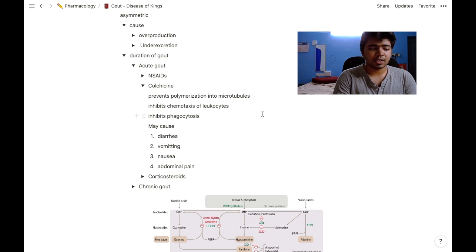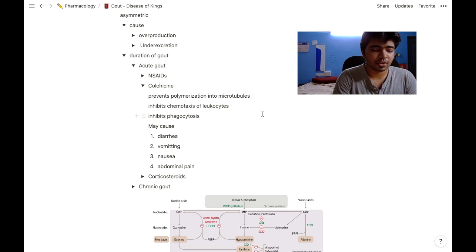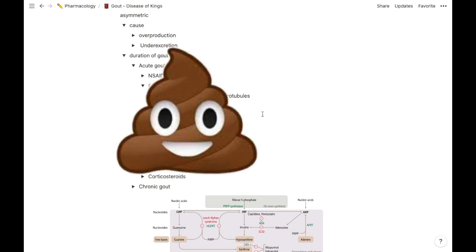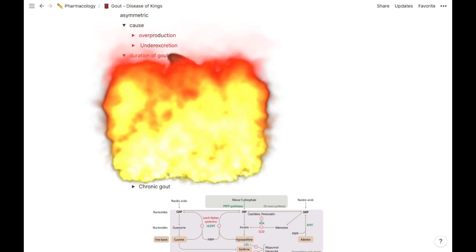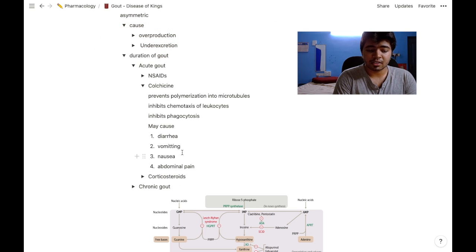Colchicine prevents polymerization of the microtubules, thereby inhibiting chemotaxis of the leukocytes, which in turn inhibits phagocytosis. Adverse effects of colchicine include diarrhea, vomiting, nausea, and abdominal pain.